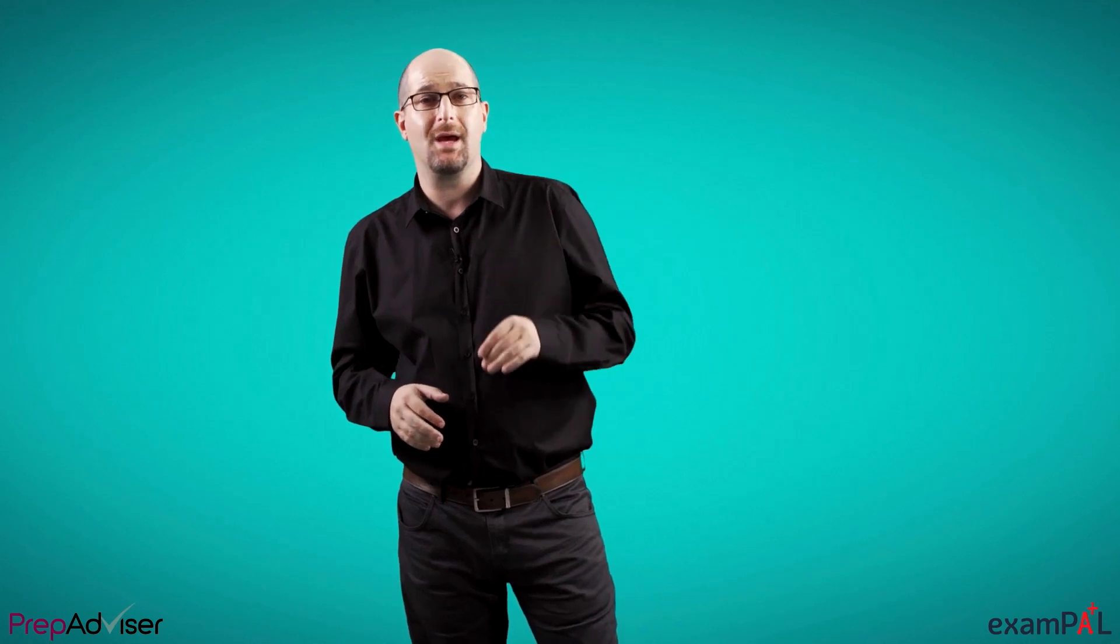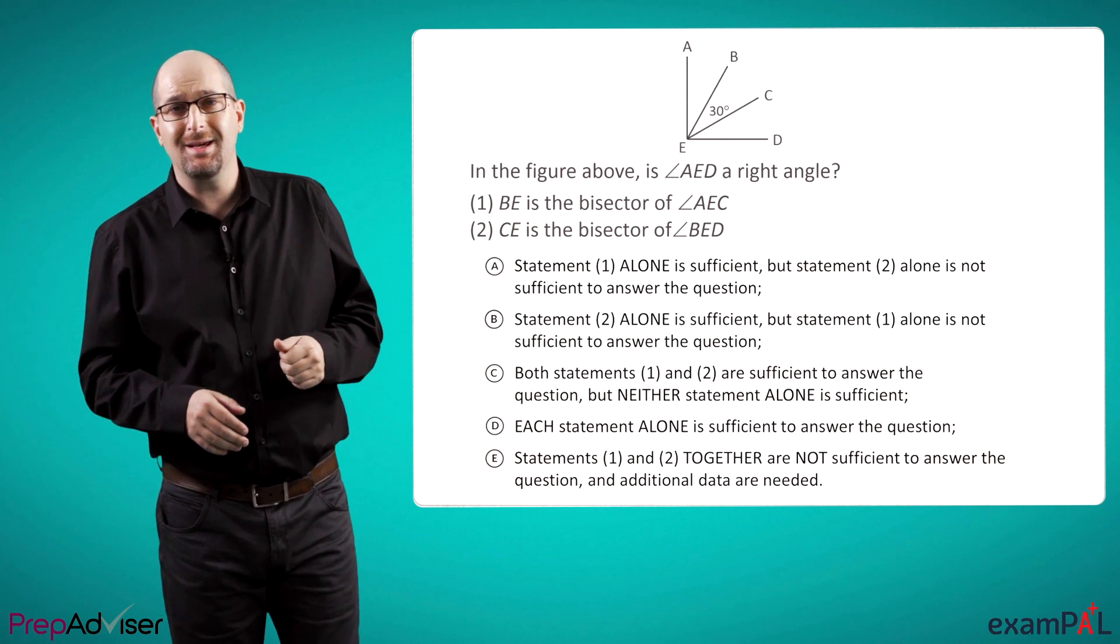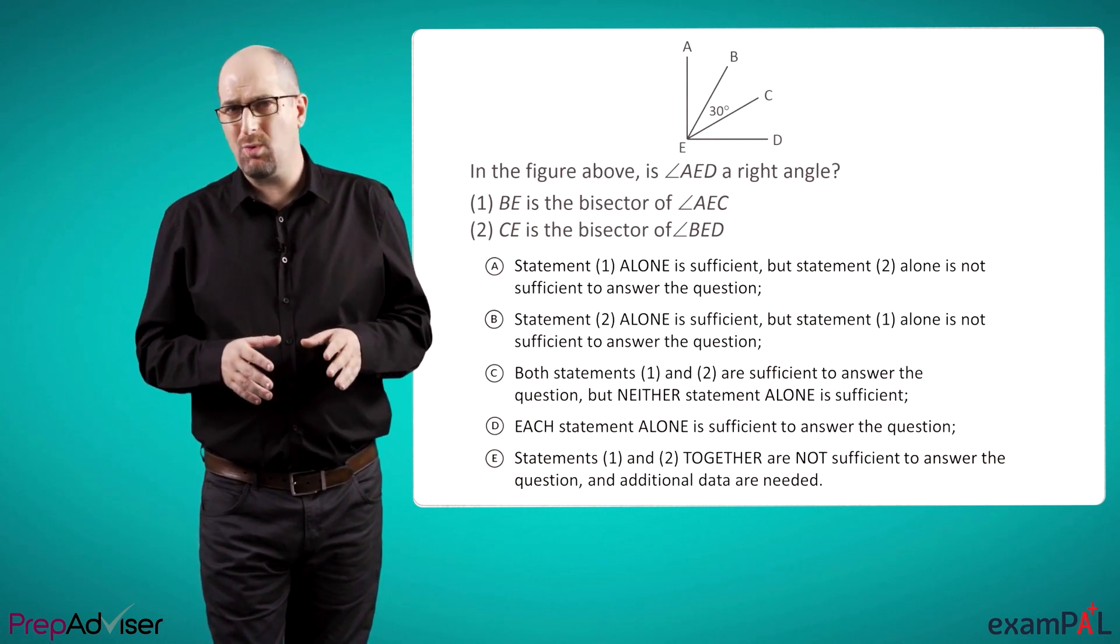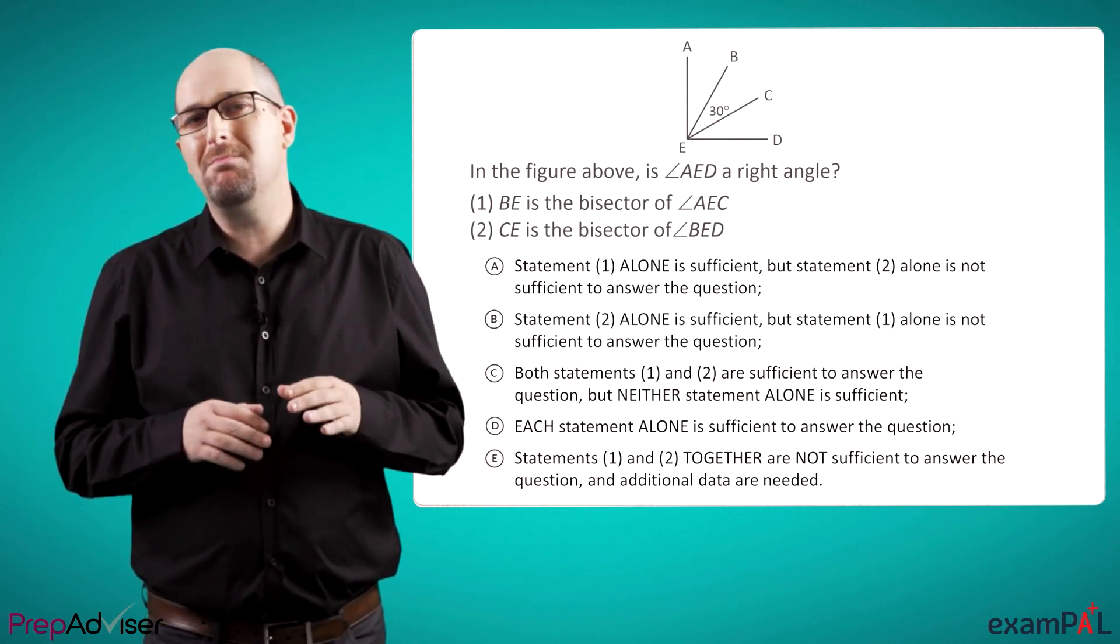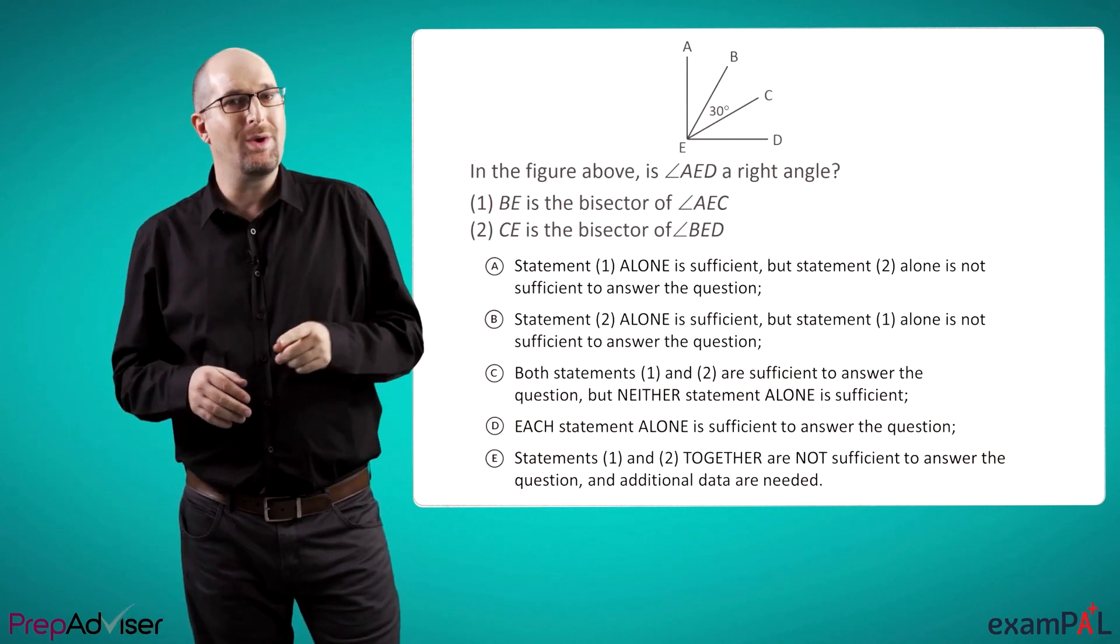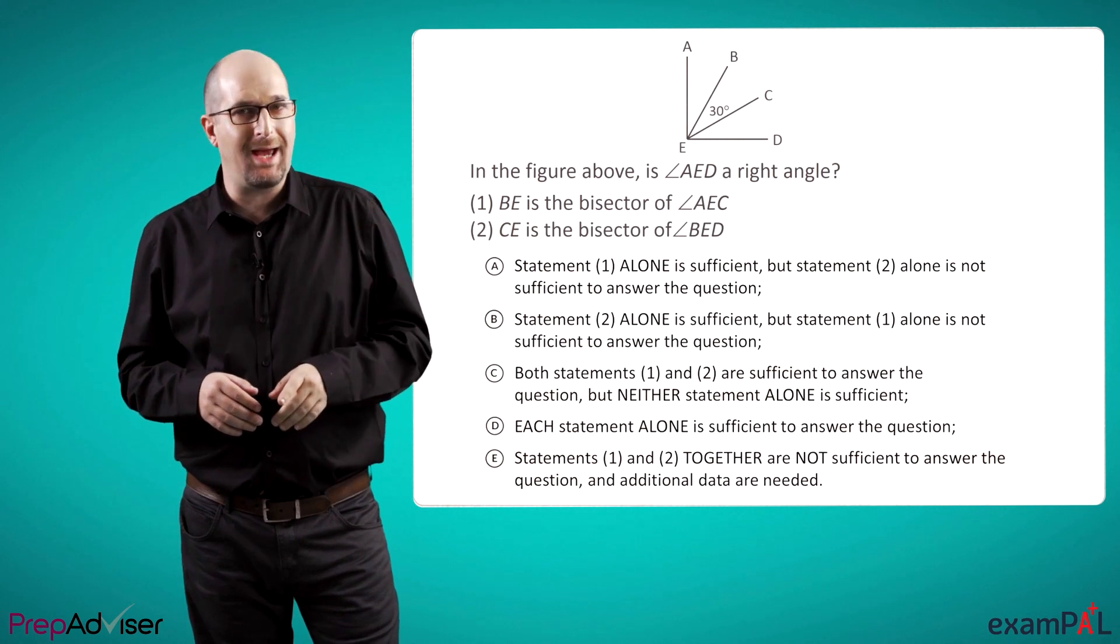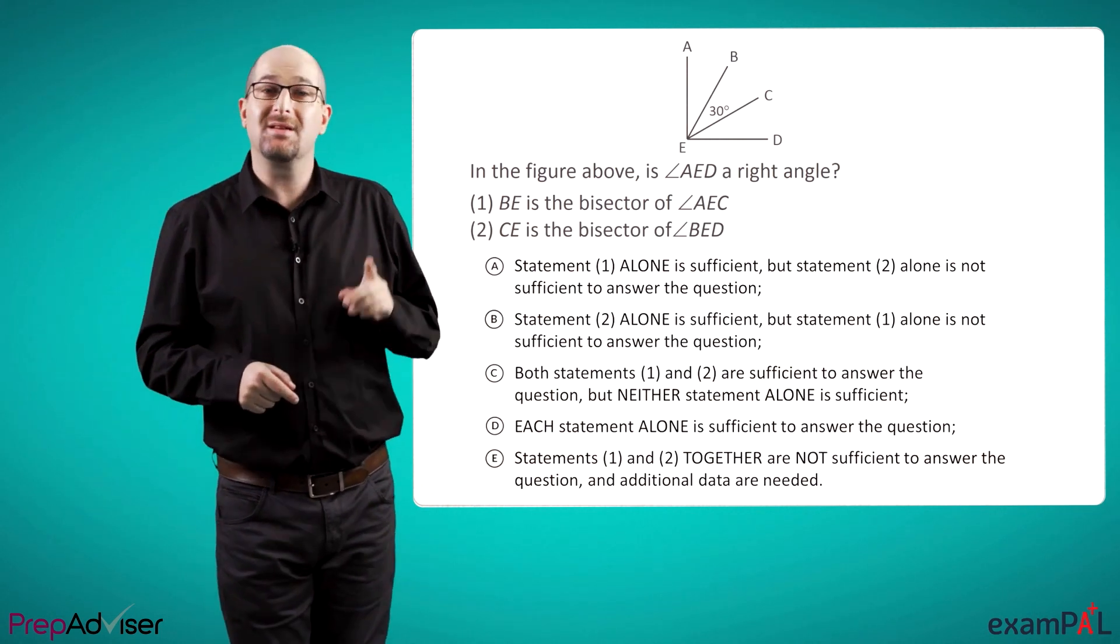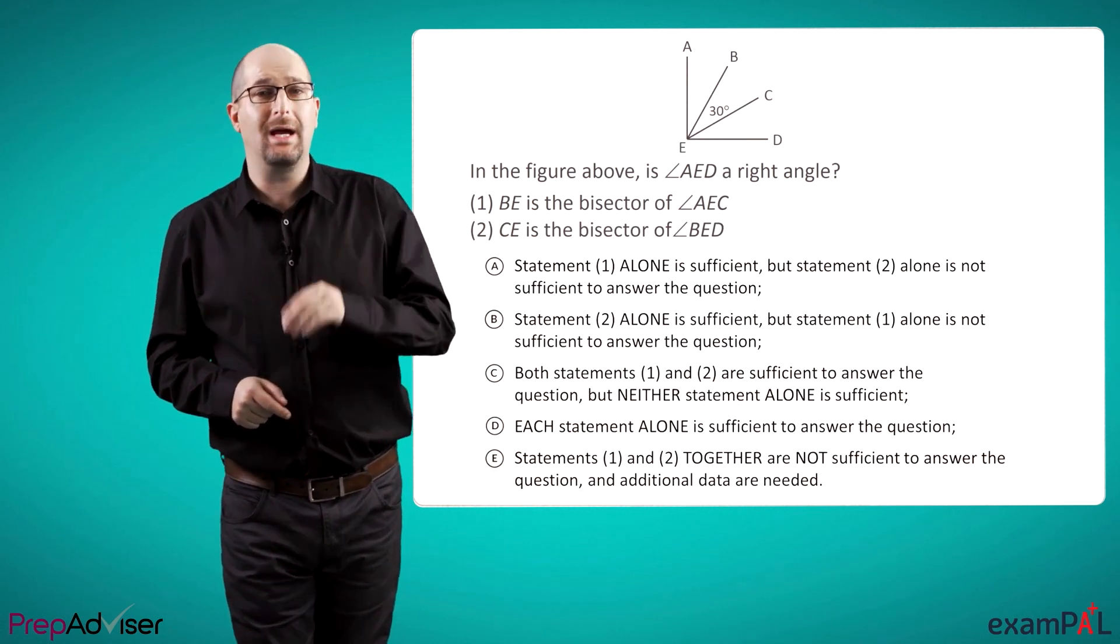For example, in this question, we are asked if angle AED is a right angle. Although it definitely looks like one, we must ignore this. The figure could be drawn in many different ways and we can't trust it. In fact, we have to combine both statement one, which tells us AEB's angle, and two, which tells us BED's, to discover that AED is, in fact, 90 degrees.